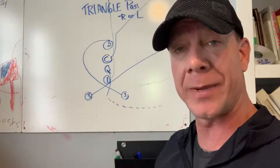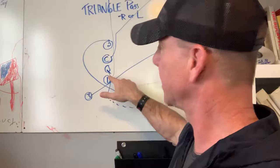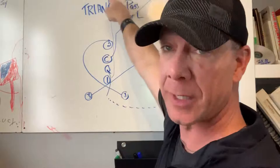Alright Bengals players and coaches, here's your triangle pass. We can go triangle pass right or left, pretty simple. Number one is always going to go the same way he goes when he's carrying the ball, and he's going deep down the middle. So deep middle for number one.